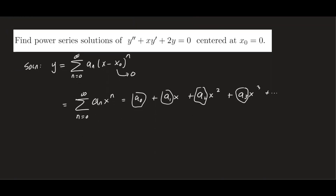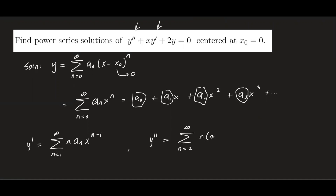Our expression must involve the first and second derivatives, so we're going to differentiate y. y prime is the sum starting at n equals one to infinity of n times aₙ x to the n minus one. Differentiating again, the second derivative is the sum starting at n equals two to infinity of n times (n minus one) aₙ x to the power n minus two. These are the expressions for the first and second derivatives.